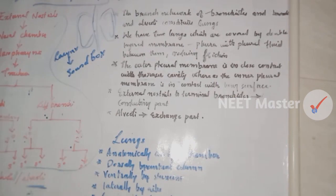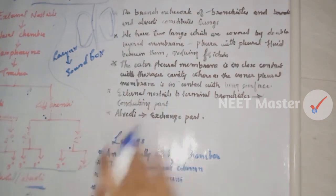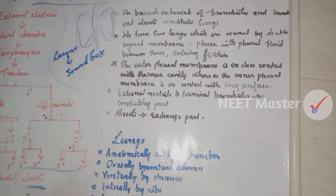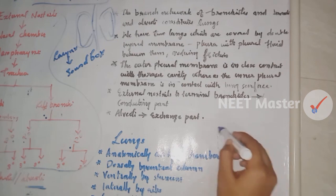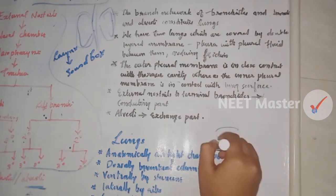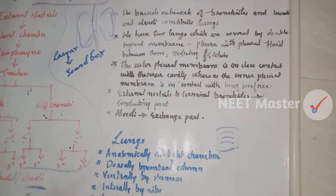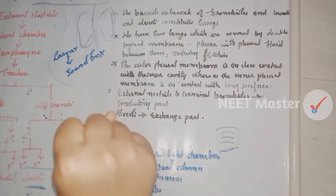The thoracic chamber is an anatomically airtight chamber. It is bounded dorsally by the vertebral column, ventrally by the sternum, laterally by the ribs, and on the lower side by the dome-shaped diaphragm. Pressure variation in this airtight chamber facilitates breathing.